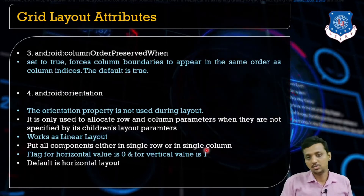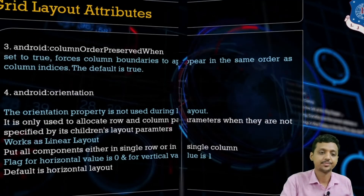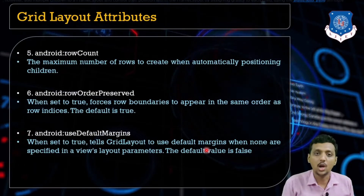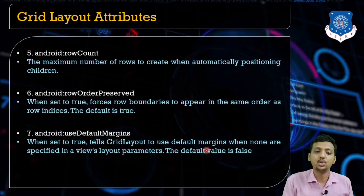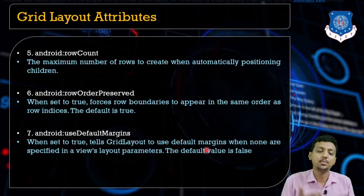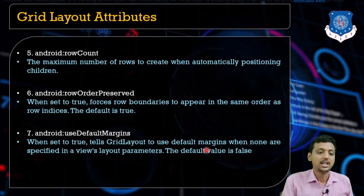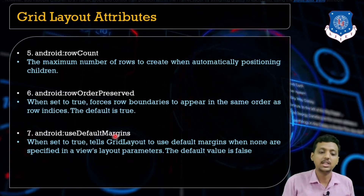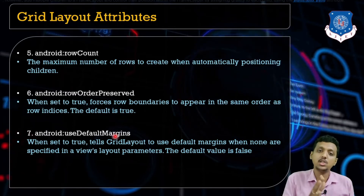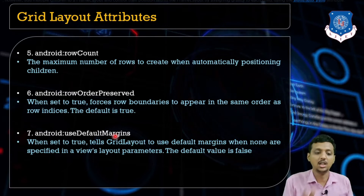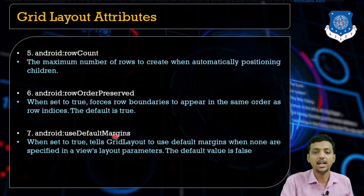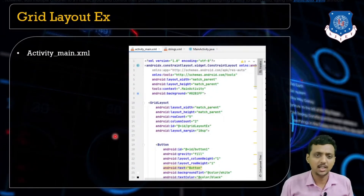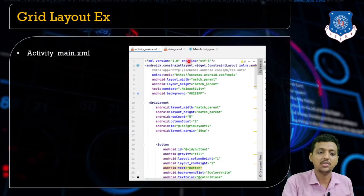For vertical layout the value should be one. The next Grid Layout attribute is rowCount — the number of rows to create, automatically positioning child layouts. rowOrderPreserved works the same as columnOrderPreserved. The useDefaultMargin attribute, when set to true, causes Grid Layout to use default margins when none are specified in the view layout parameters; by default the value is false.